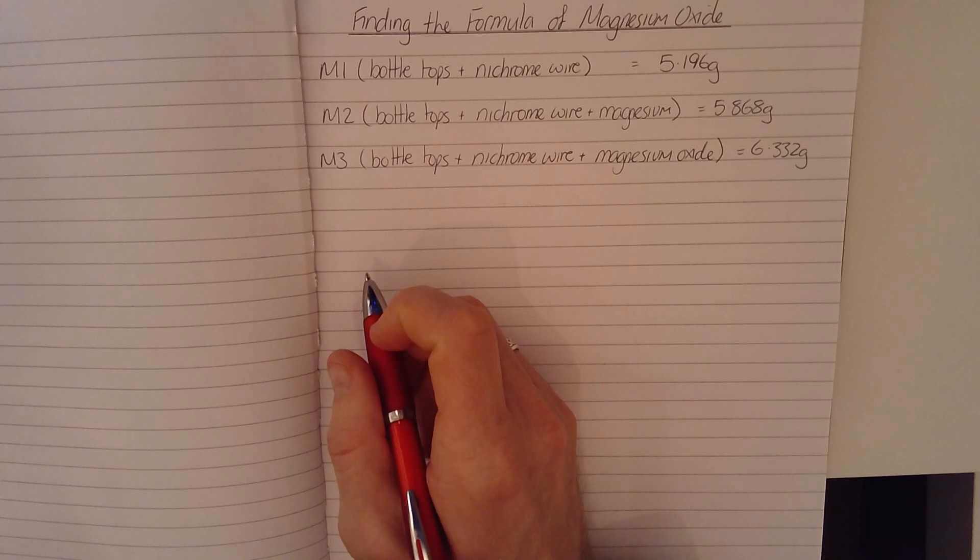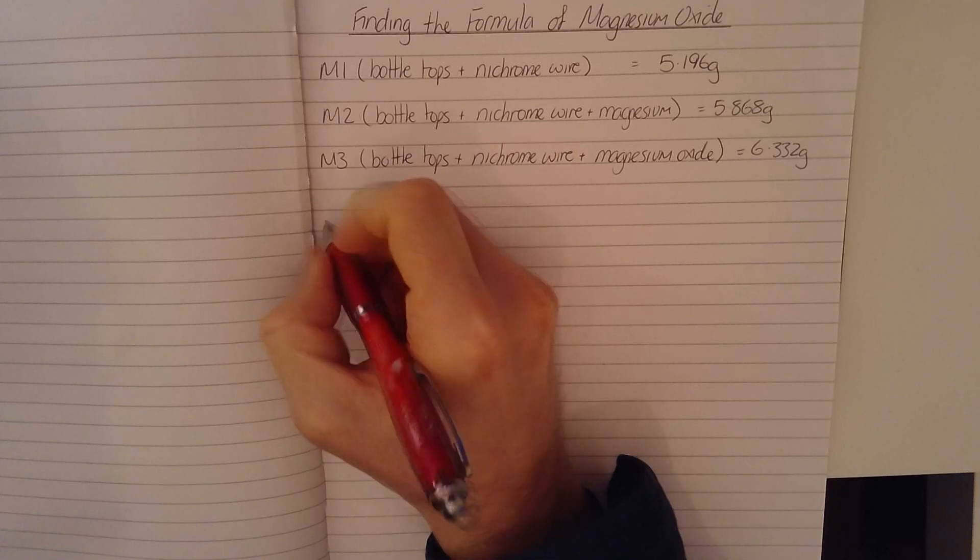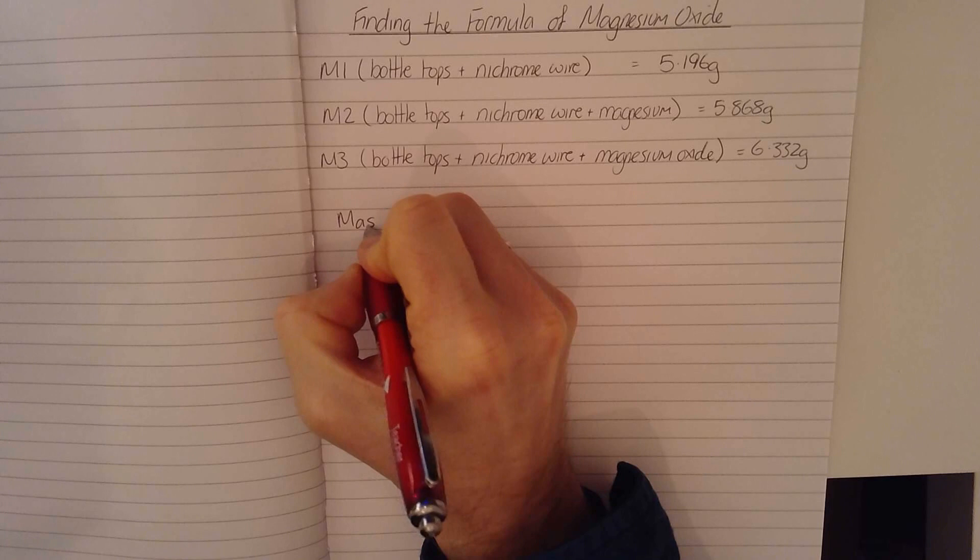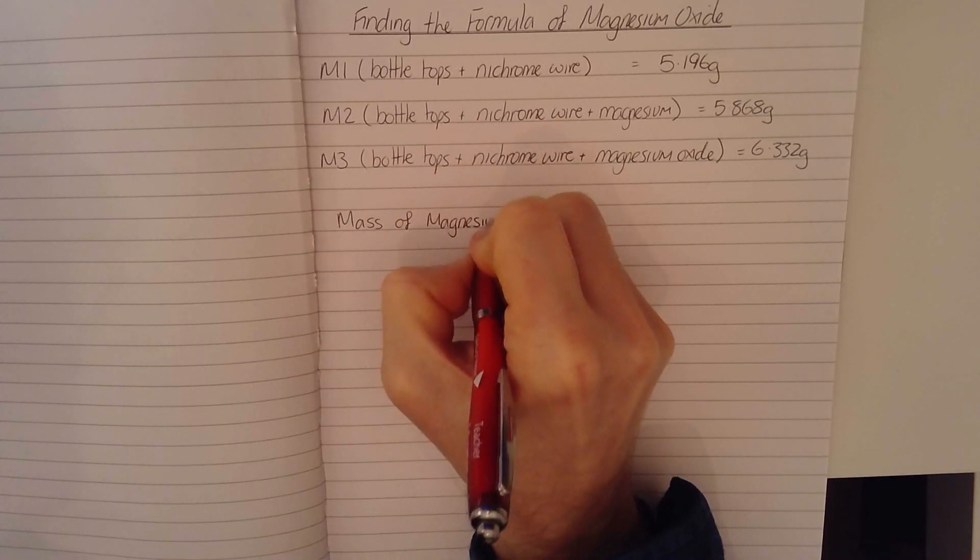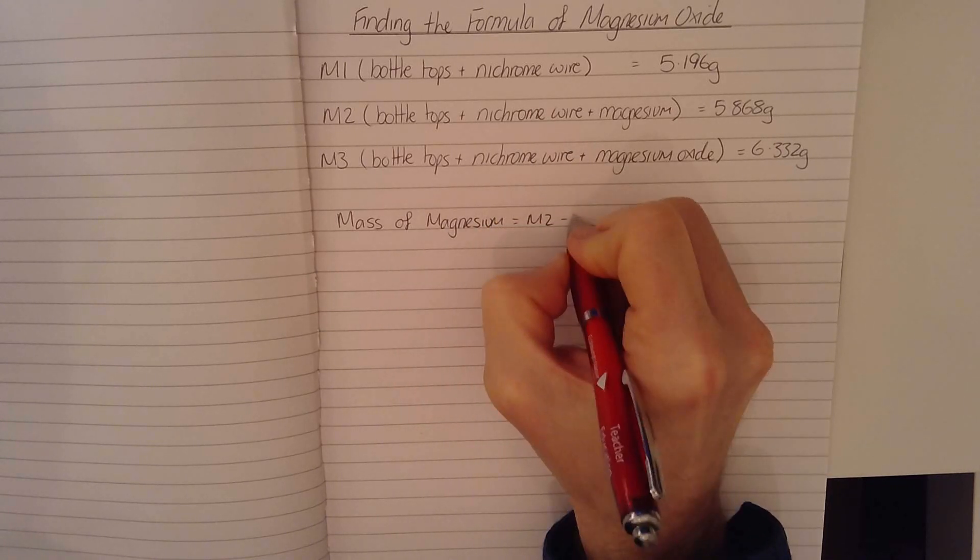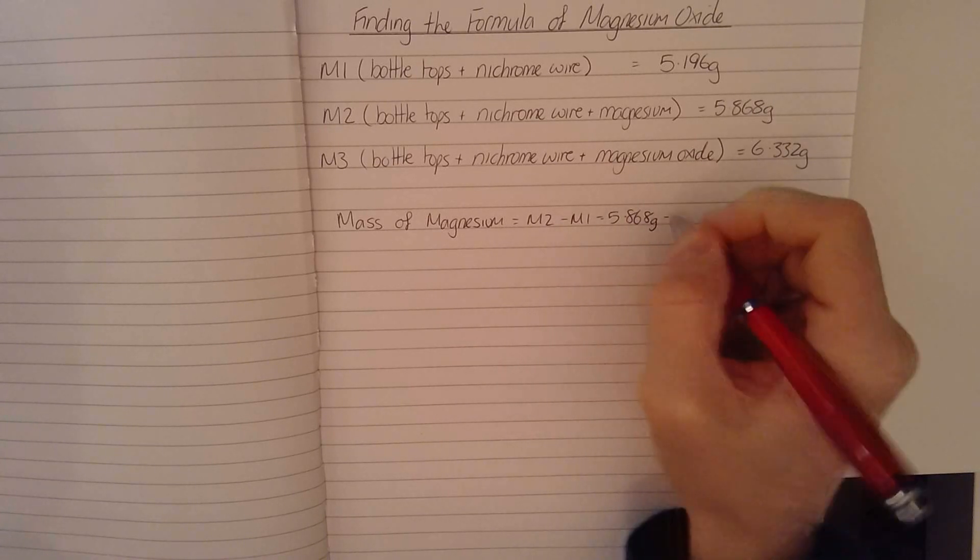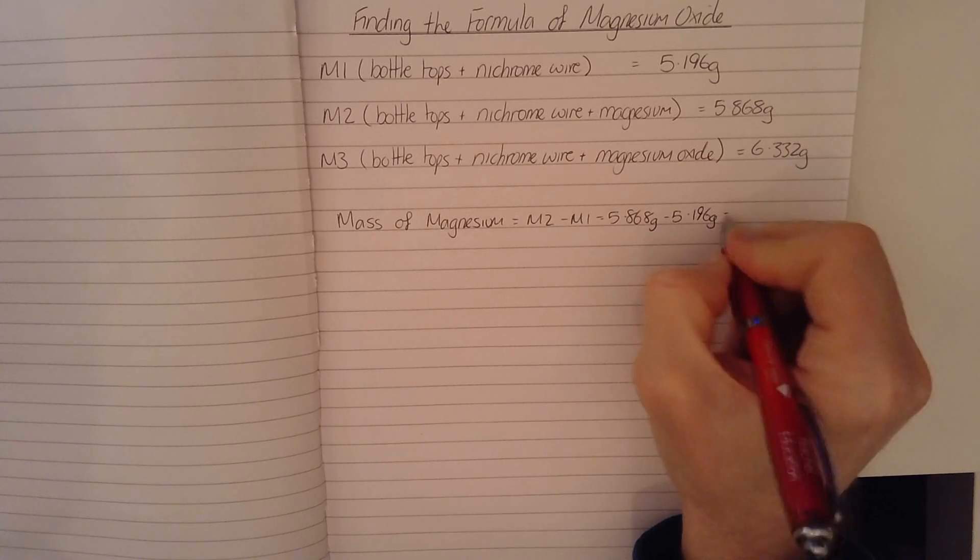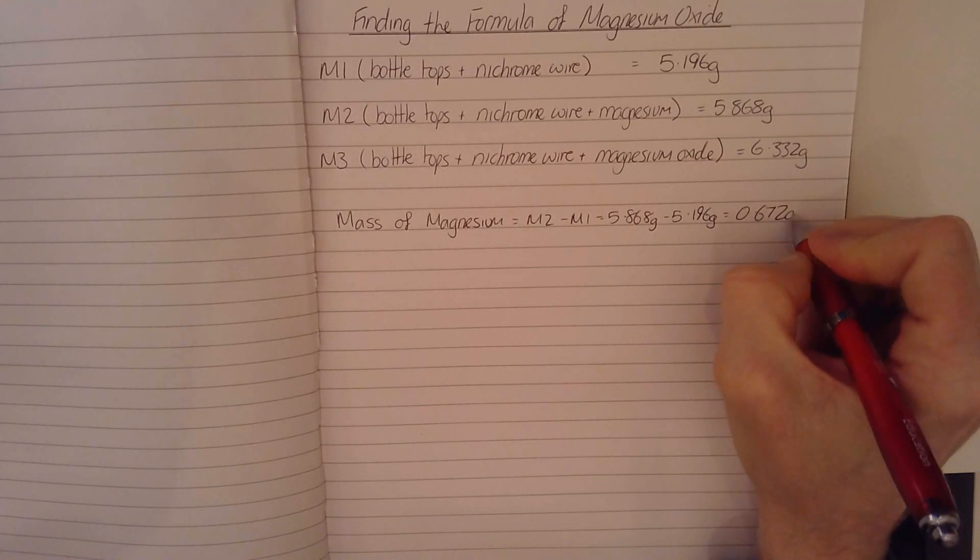So I can work out the mass of magnesium that was in the bottle tops by simply taking M2 and subtracting M1. So the mass of magnesium equals M2 minus M1 equals 5.868 grams minus 5.196 grams. And I've got a calculator at the side here. I can do that. And that is 0.672 grams.